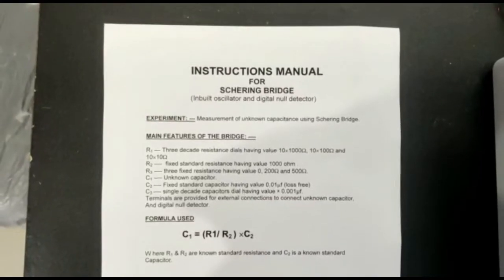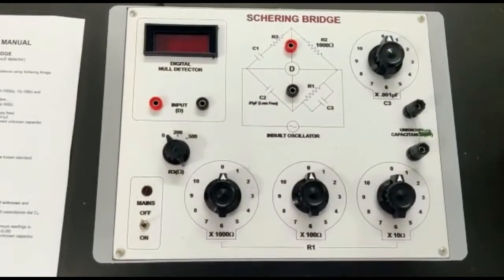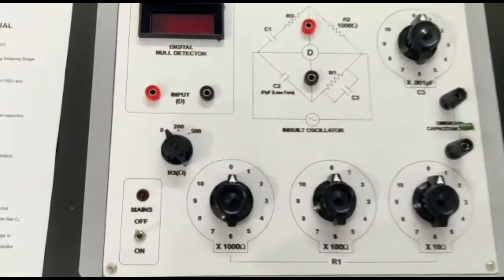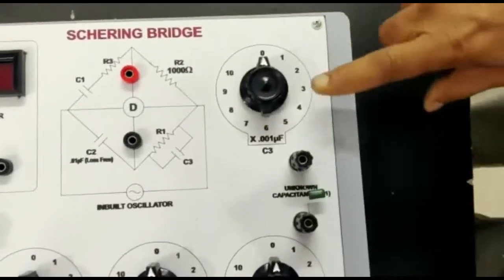Measurement of unknown capacitance using Schering bridge. All the necessary accessories are provided internally. Set R3 at 0 and C3 at 0.